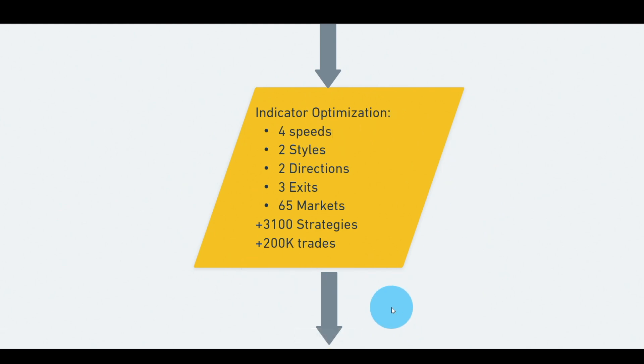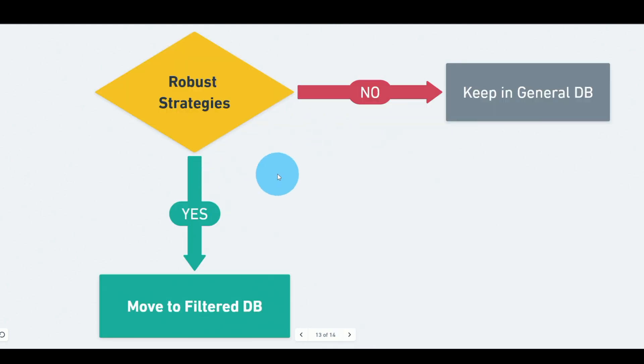The same applies to the other speed targets. Also, not all markets have the same data — some start in 2006, some in 2007, and three markets start in 2012 because prior data is in negative territory due to futures adjustments. Once optimization is complete for a given indicator, we have a database of about 3,100 strategies, and we then test them for robustness.